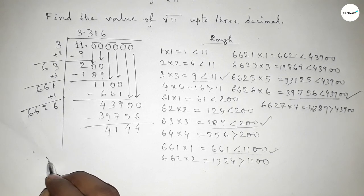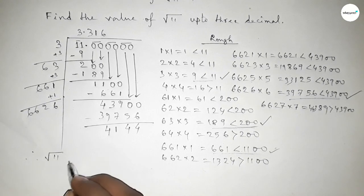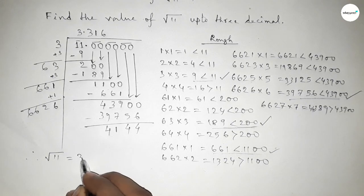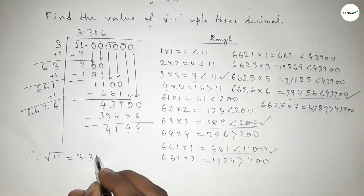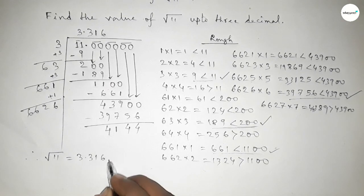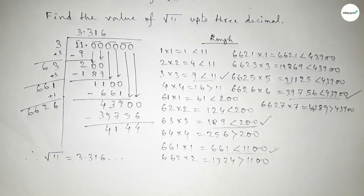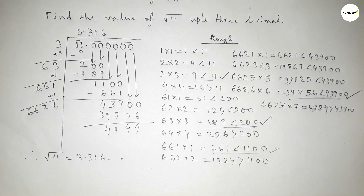We can continue further, but here we only need the value of root 11 up to 3 decimal places. So root 11 equals 3.316. That's all — thanks for watching. If this video is helpful, please share it.